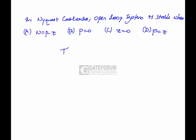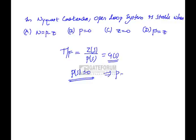For the open loop system question, the transfer function G(S) has zeros Z(S) and poles P(S). An open loop system is stable only when P(S) = 0, i.e., the poles should equal zero. This is the condition for the Nyquist criteria in an open loop system from a stability point of view. Option B is the correct answer.